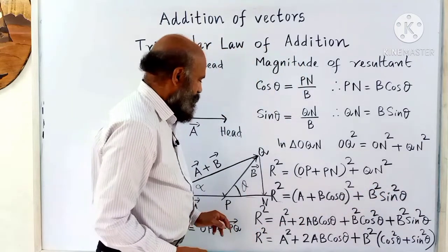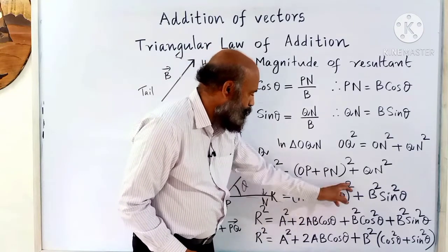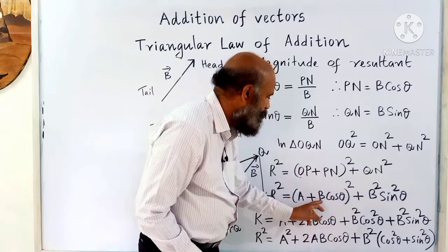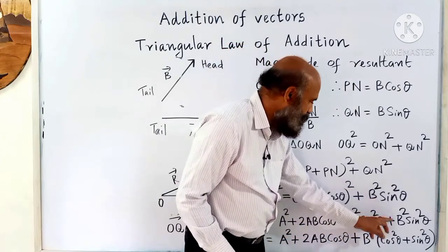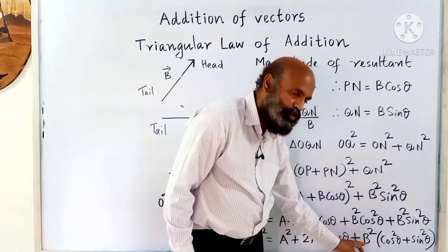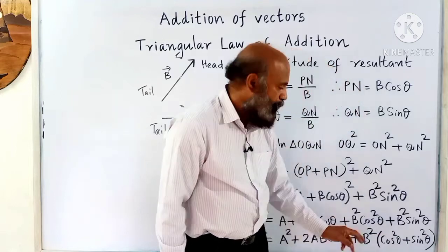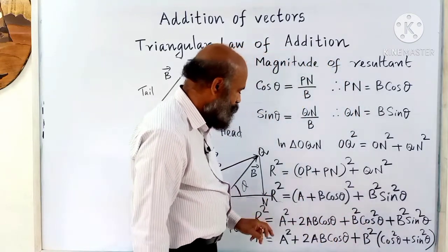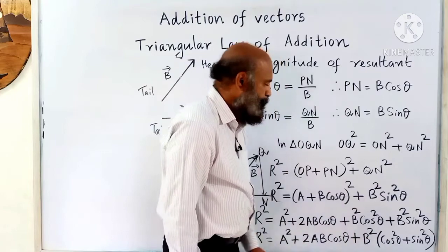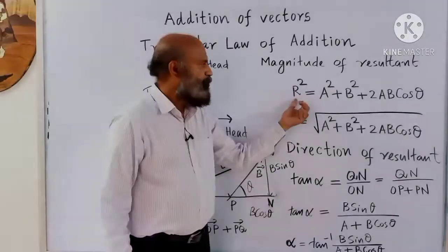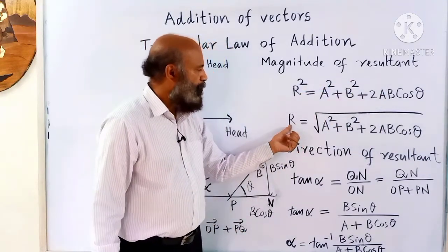Expanding: r squared equals a squared plus 2ab cos theta plus b squared cos squared theta plus b squared sin squared theta. Taking b squared common from the last two terms gives b squared times (cos squared theta plus sin squared theta), which equals b squared times 1. So r squared equals a squared plus b squared plus 2ab cos theta.